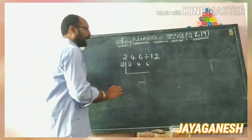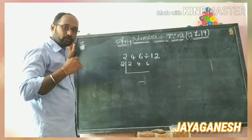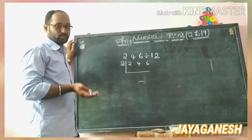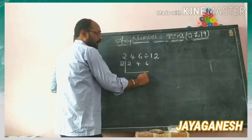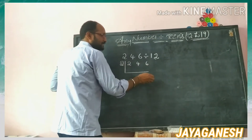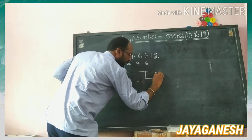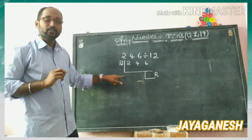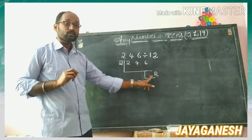In this question I took a 3-digit number, but you can take a 4-digit, 5-digit, 6-digit, or even a 10-digit question. For a 3-digit number the last digit is 6. Below, you keep one bracket — whatever you write there is called the remainder.